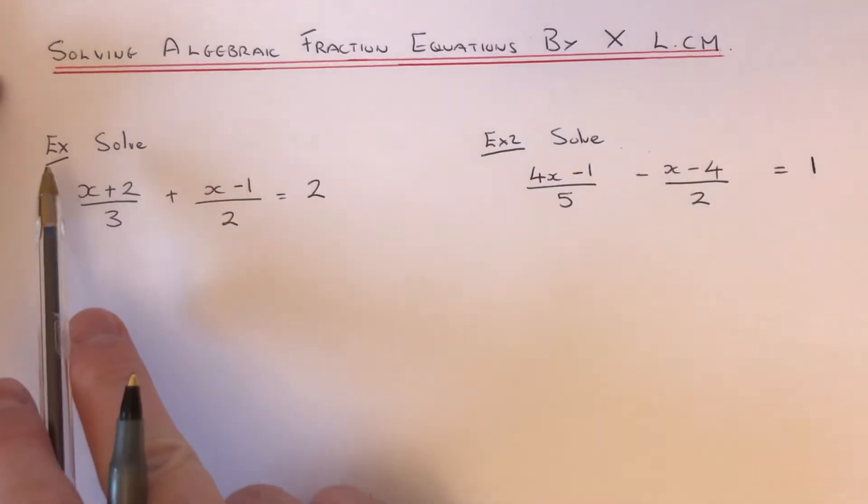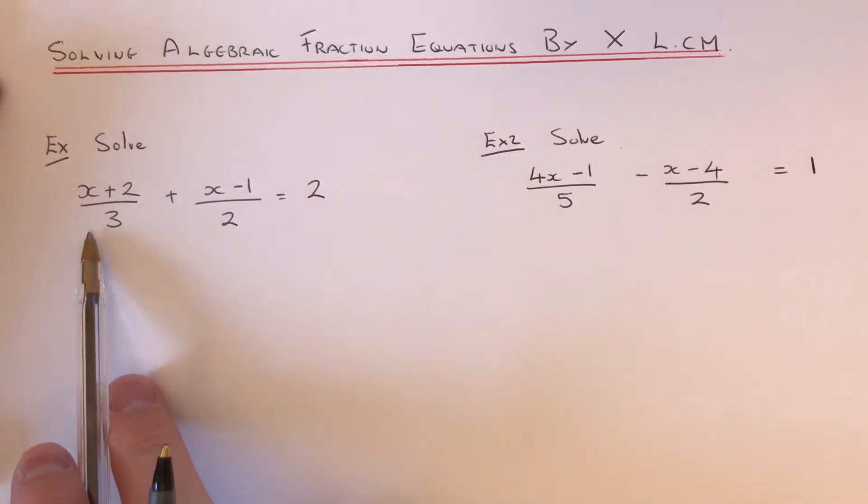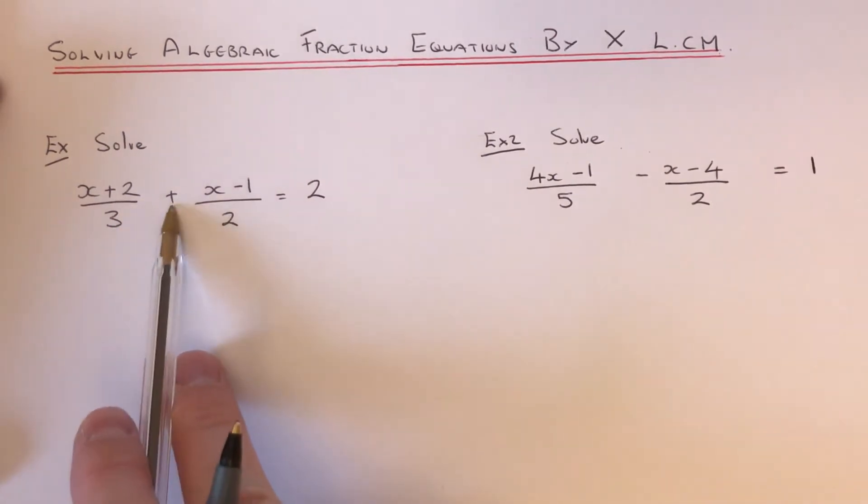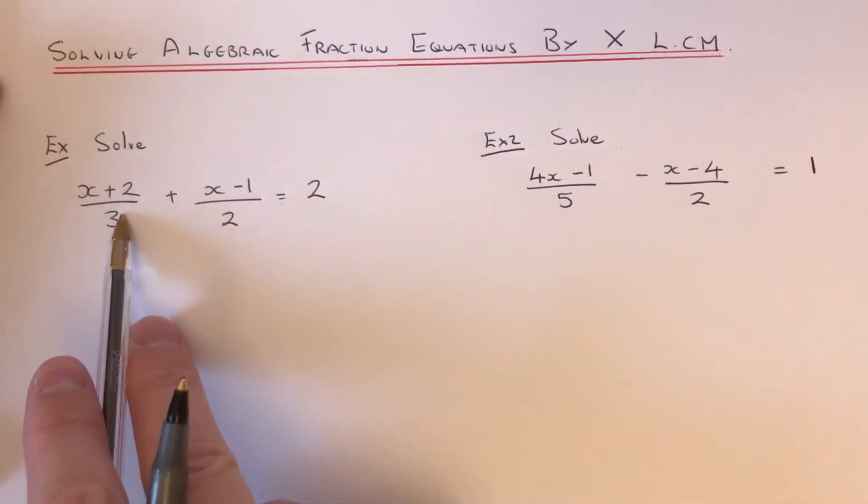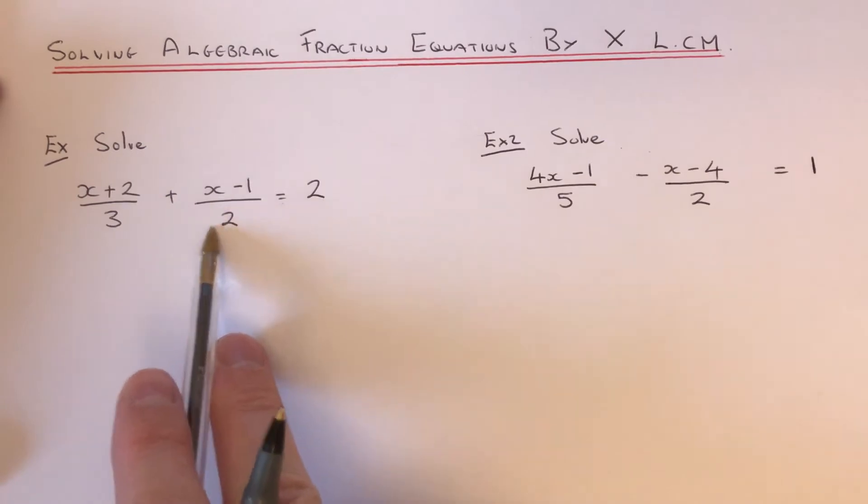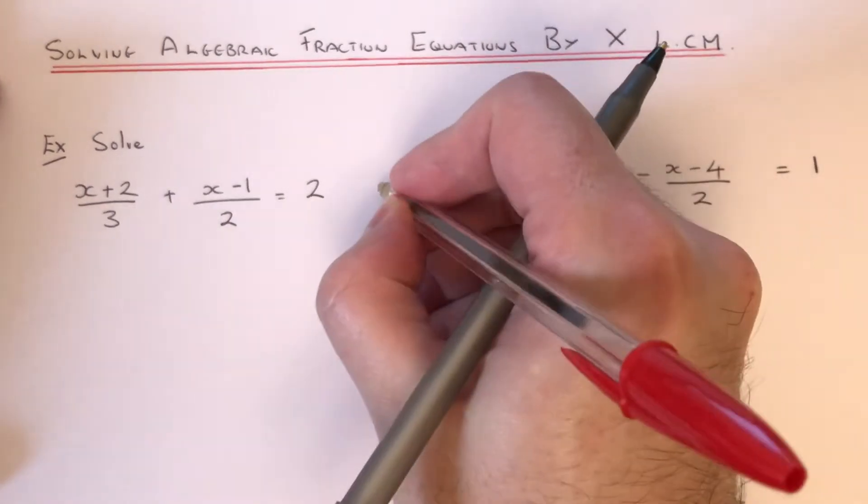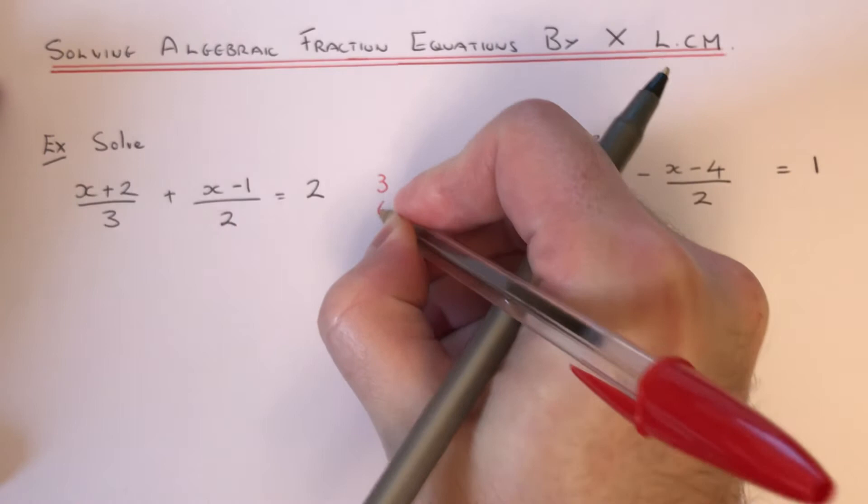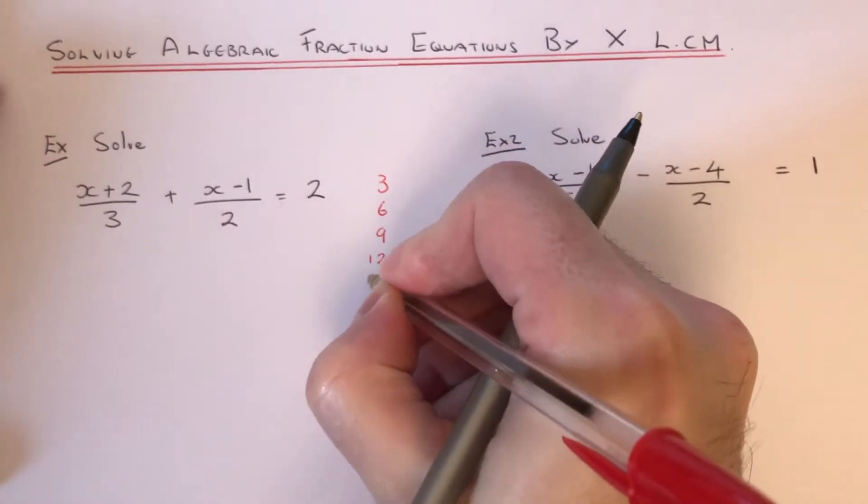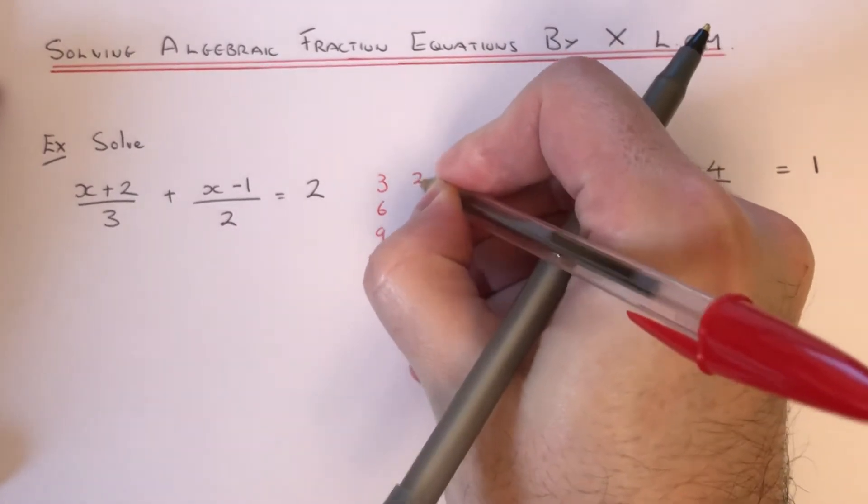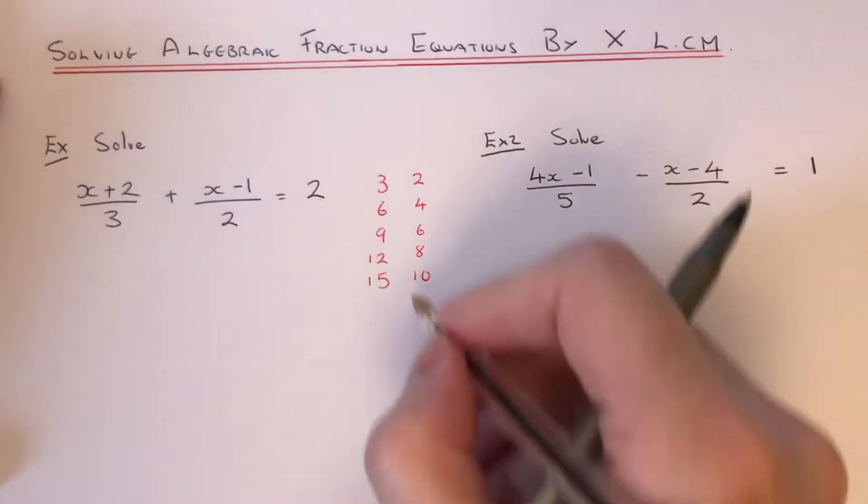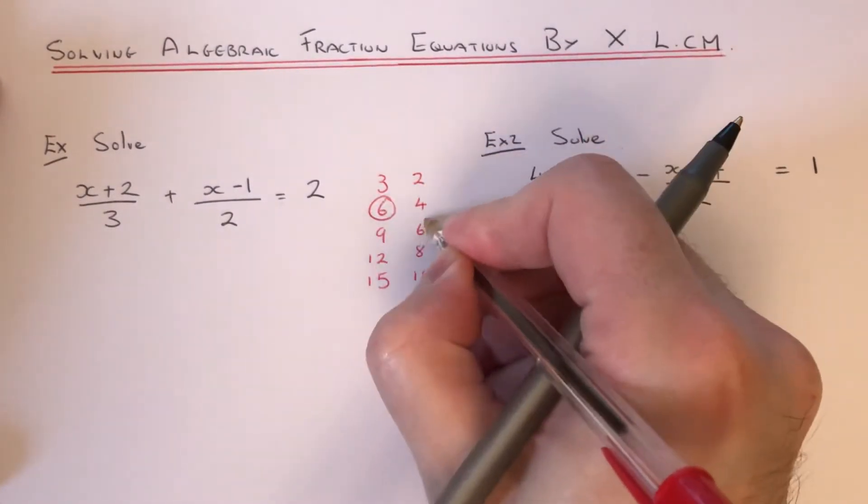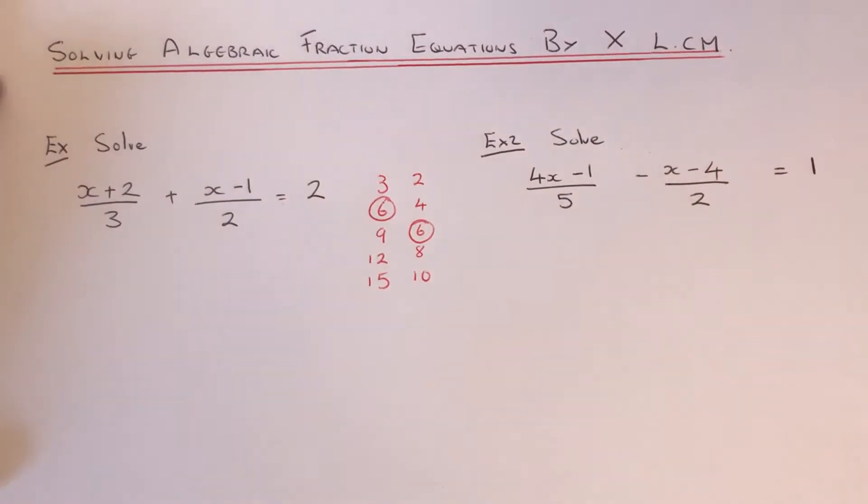Let's have a look at our first example. We've got x plus 2 over 3 plus x minus 1 over 2 equals 2. So I'm going to look for my lowest common multiple of my denominators 3 and 2. Let's just write down our multiples of 3 and write down our multiples of 2. You can see our lowest multiple of 3 and 2 is 6.